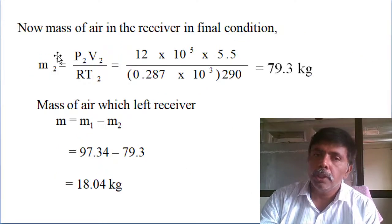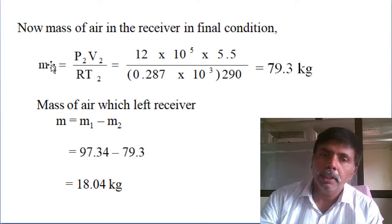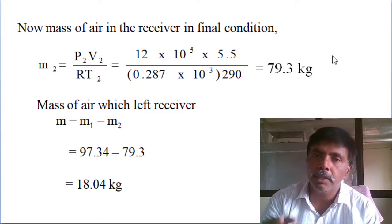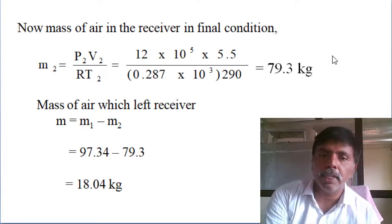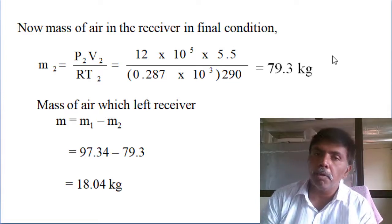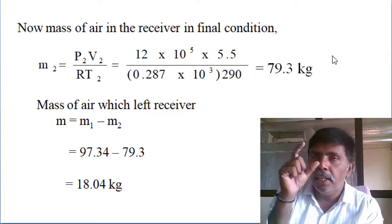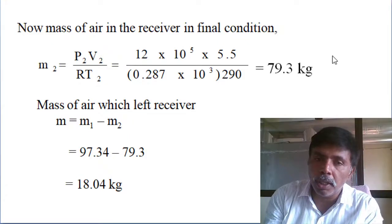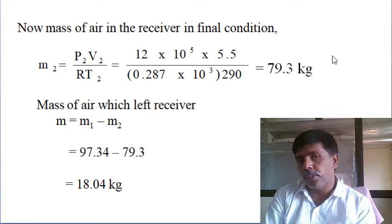Once T2 is known, use PV = mRT again to find the final mass of air, which is 79.3 kg. The initial mass was 97.34 kg. Therefore, the mass of air that left the receiver = 97.34 - 79.3 = 18 kg, which escaped while the receiver pressure dropped from 16 bar to 12 bar.